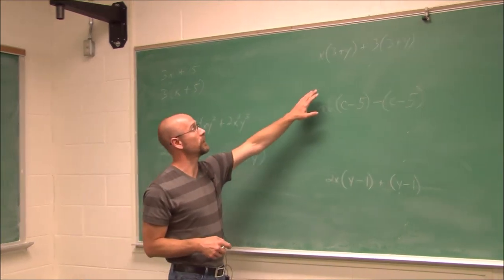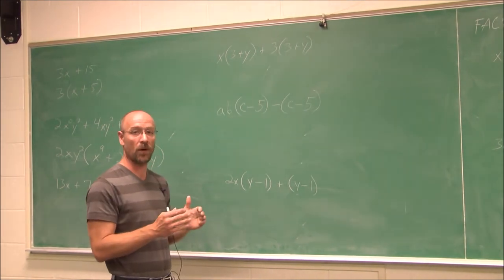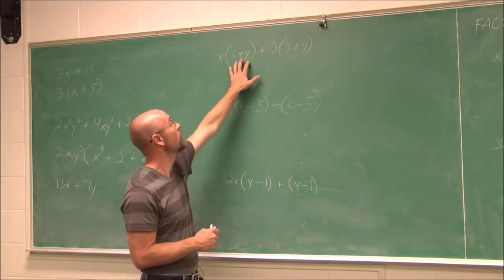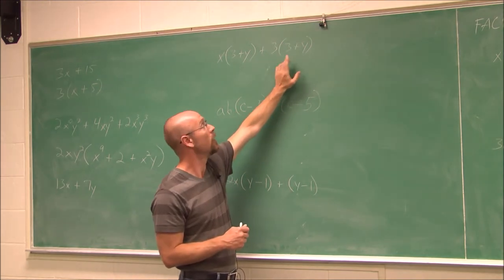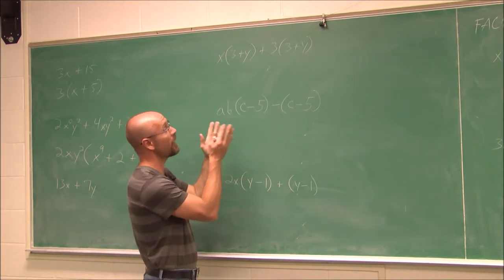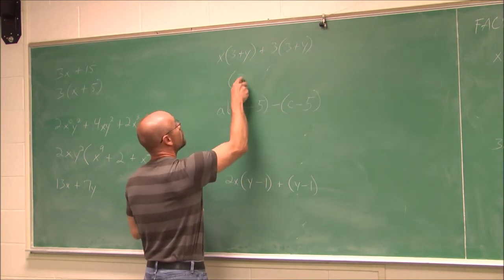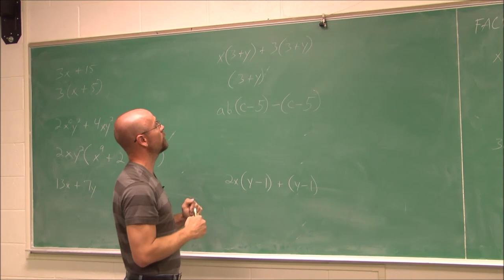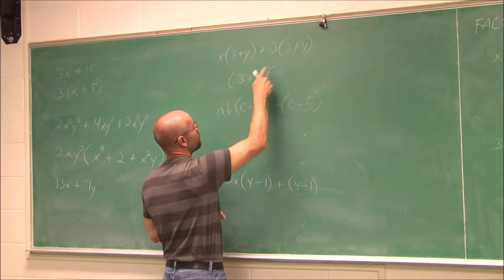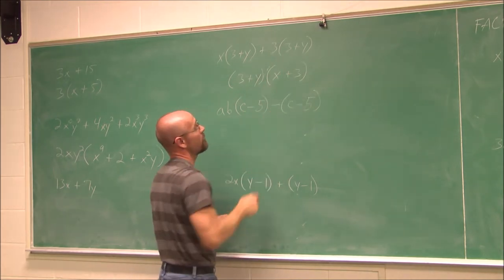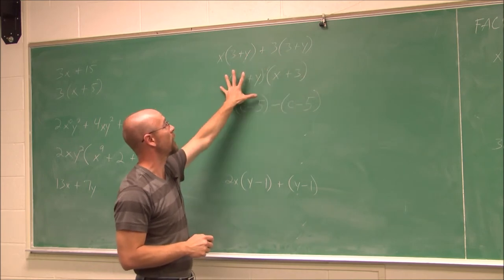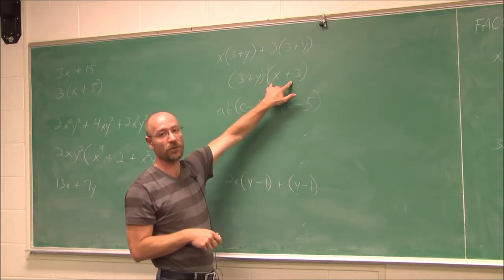Sometimes when we're factoring, we can factor out an entire group of terms. If we look at this example, I have x times the quantity 3 plus y, and I have 3 times the quantity 3 plus y. What I notice is x and 3 are both being multiplied by 3 plus y, so that's the common factor. I can factor out this sum 3 plus y, and leave it in parentheses.